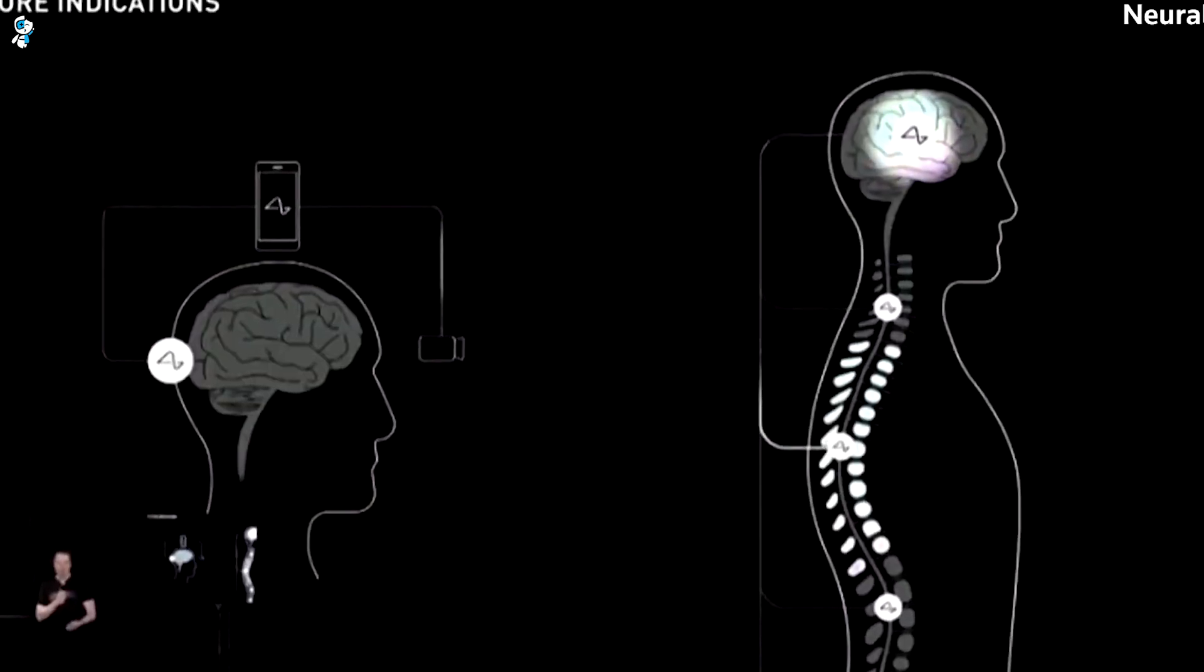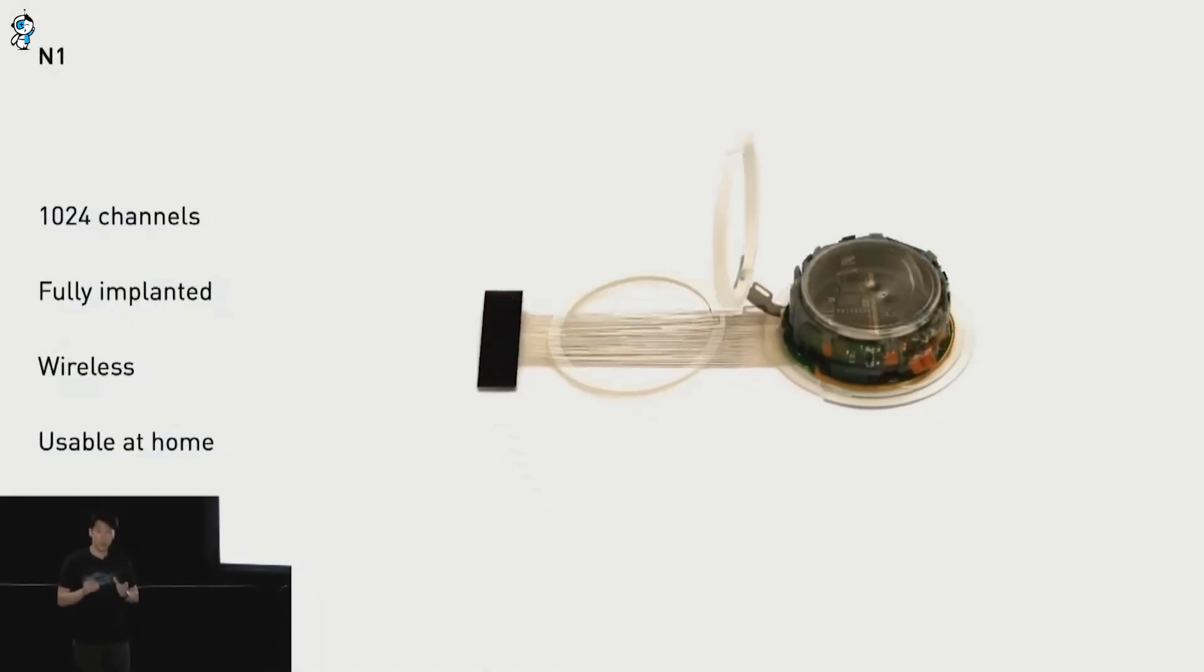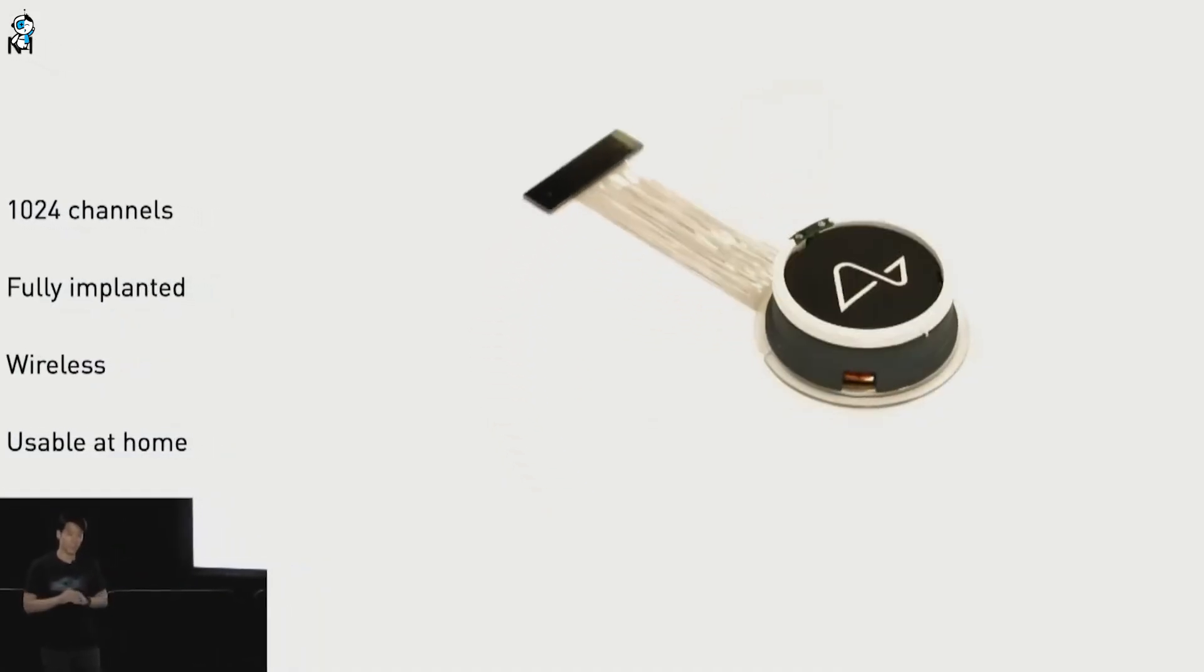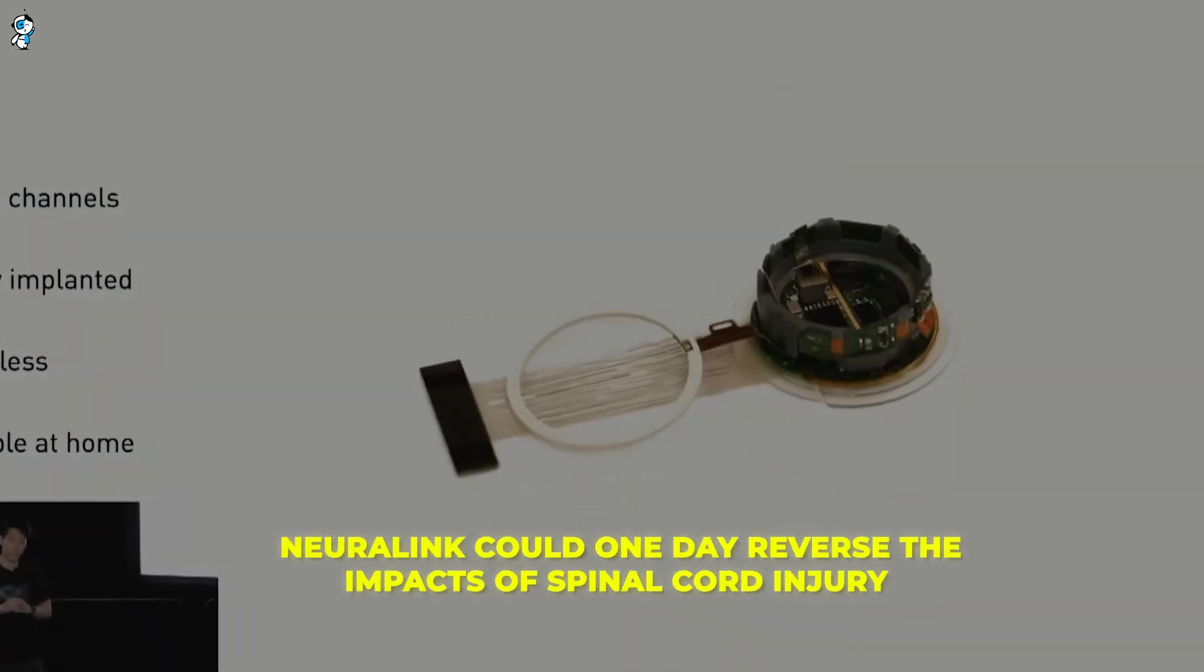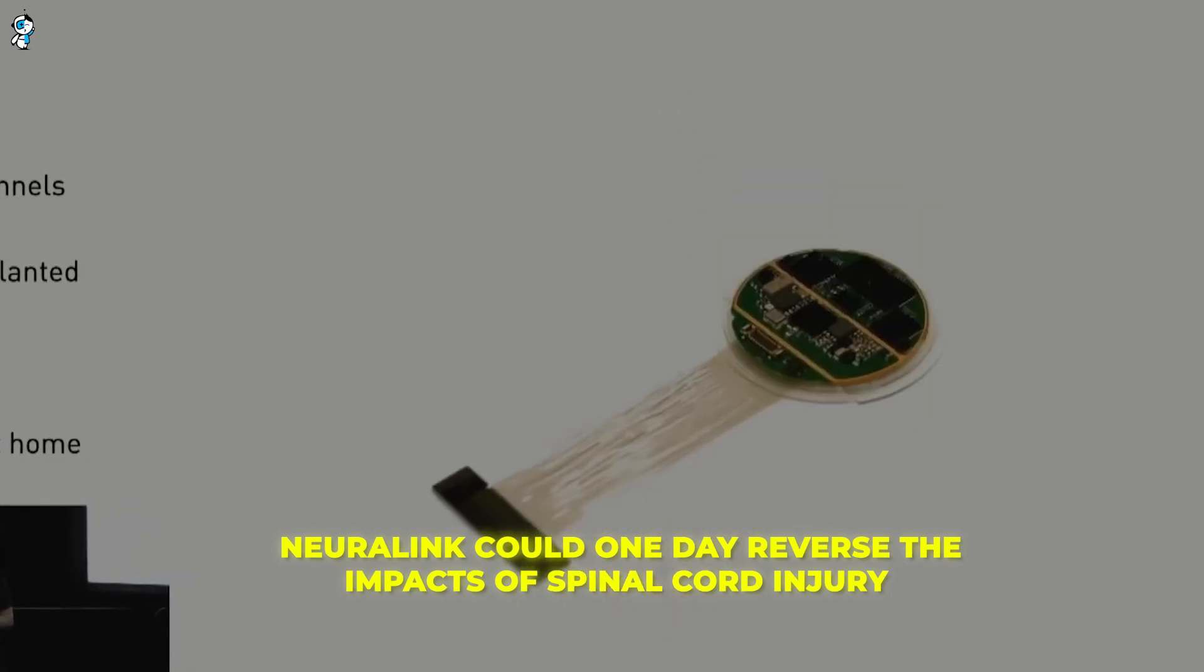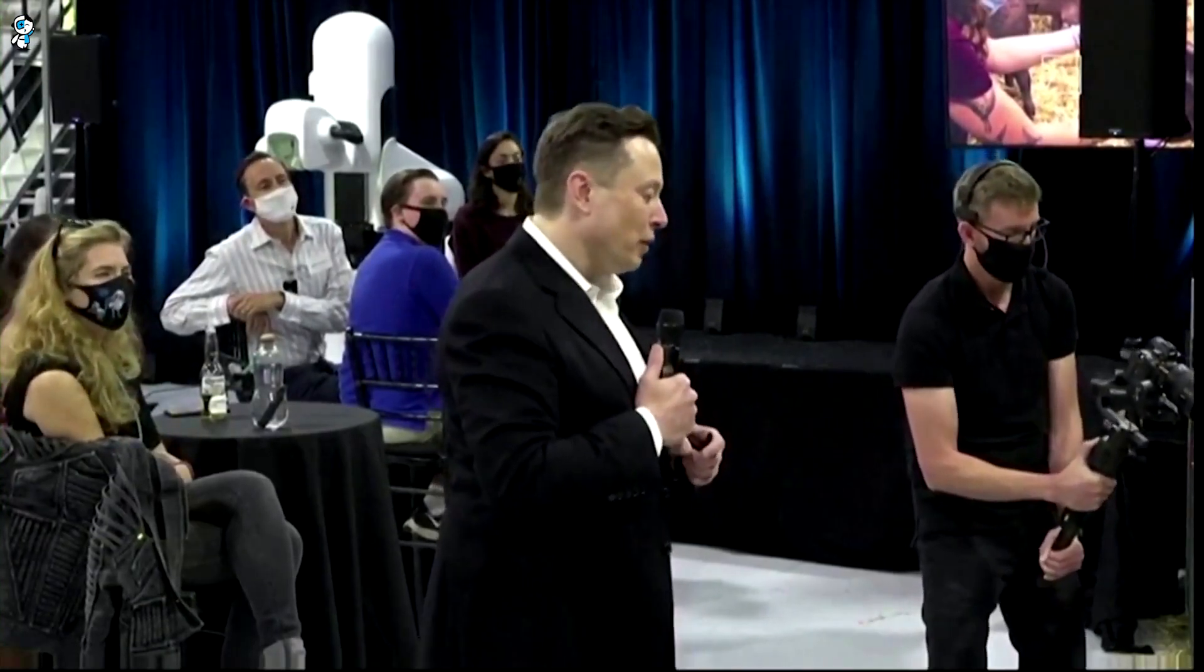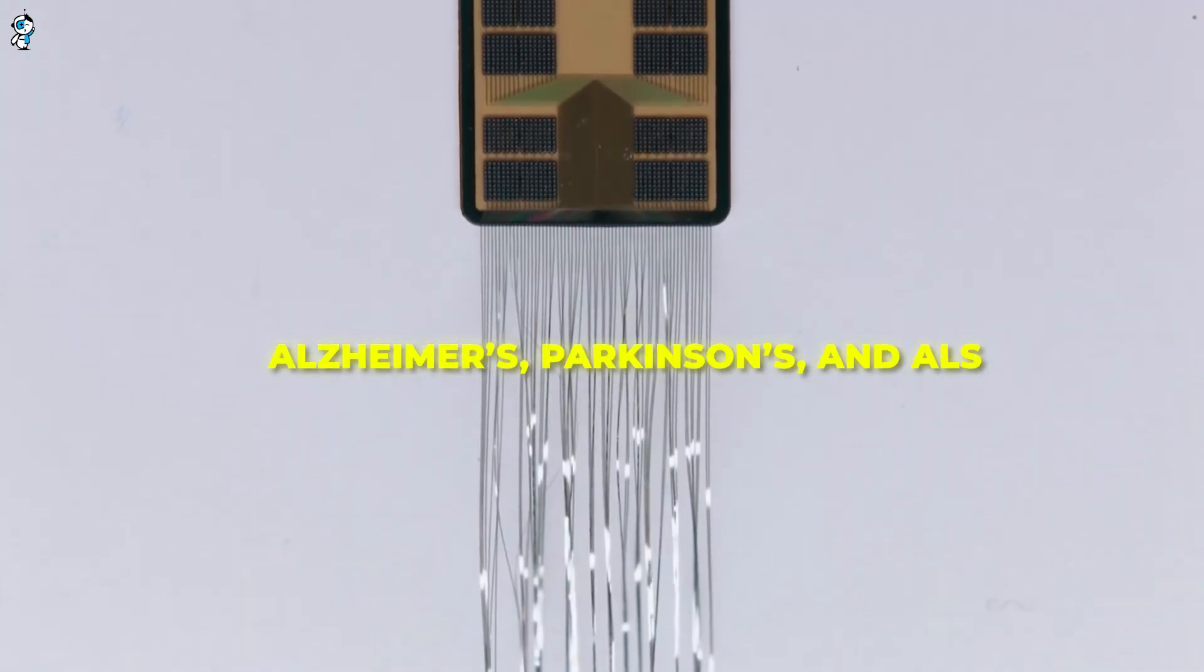Yet Musk sees Neuralink impacting far more than just paralysis in the future. He envisions a world where N1 implants treat all manner of neurological conditions. In his view, Neuralink could one day reverse the impacts of spinal cord injury itself, restoring movement to the paralyzed. Even more speculative, Musk suggests neural implants may combat brain diseases like Alzheimer's, Parkinson's, and ALS.